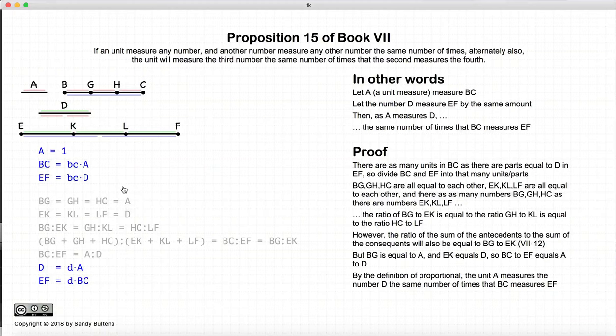So quick recap, A is the unit, A measures BC by the same number of times that D measures EF, implies that A measures D the same number of times that BC measures EF. So this is the proof, and this is going to be used in the next proposition to show the communicative properties of multiplication.